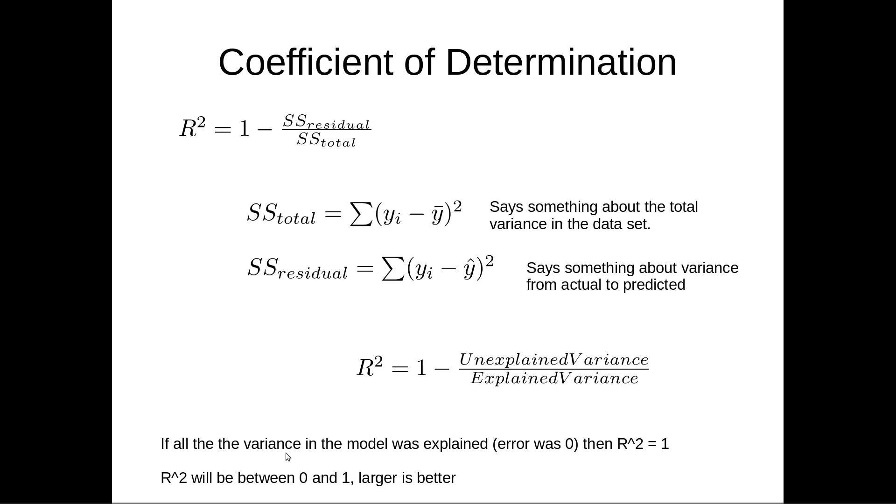So if all of the variance in the model was explained, the error was 0, then R squared would be 1. R squared will be between 0 and 1, and larger is better.